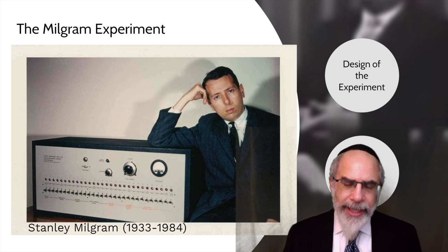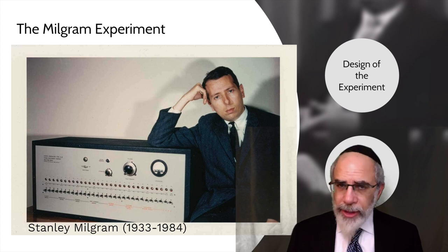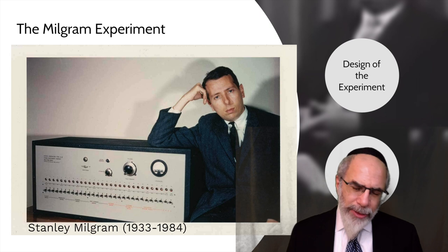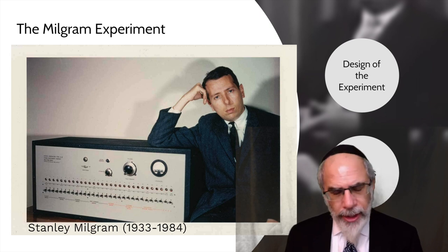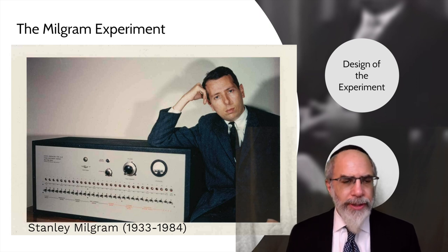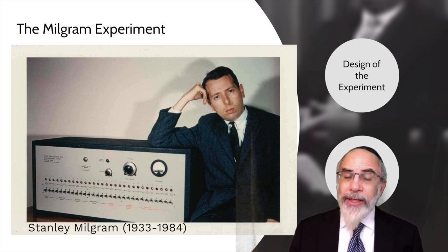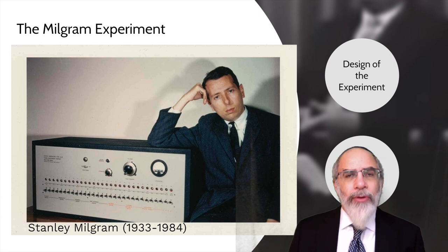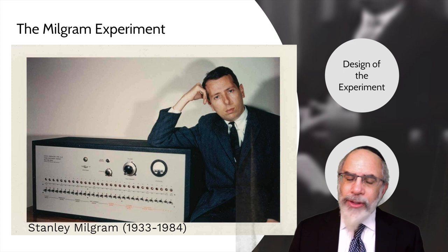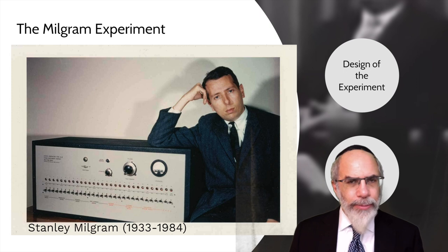Stanley Milgram was a scholar at Yale. In the early 1960s, he devised an experiment which would probably face a lot of challenges from institutional review boards today. He was especially interested in understanding how the Nazis managed to control such large populations, and so he created an experiment to see what it would take for a total stranger to be obedient enough to kill another human being.